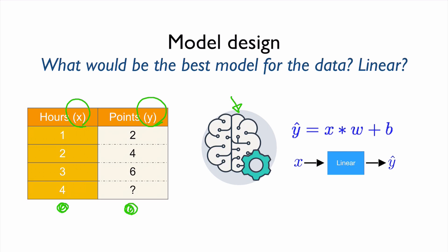In order to identify the best model, we need to look at the data carefully — what is the input and what is the output. In our case, if you spend more time studying, you probably get a higher score; if you spend less time, you get a lower score. This data has a basically linear relationship. In fact, many cases have linear relationships — for example, predicting house price based on house size, or predicting human weight based on height.